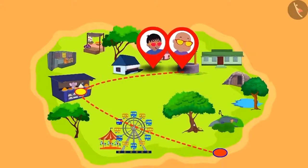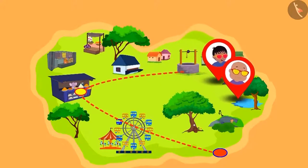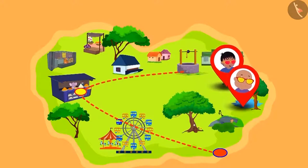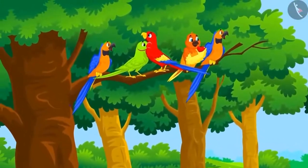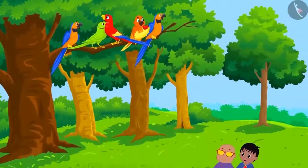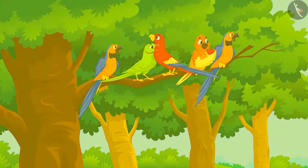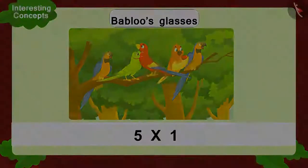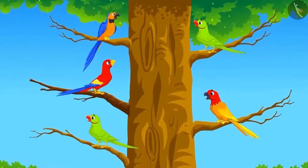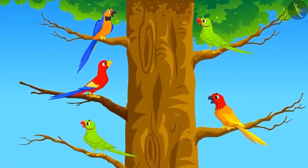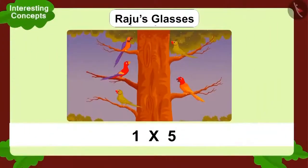Bablu and Raju were excited by the multiplication magic of their glasses and didn't realize they had reached the park. In the park, five birds were sitting on a branch of a tree. Bablu looked at the tree through his glasses first and saw this multiplication. Suddenly the birds flew and now there was one bird on five separate branches. Raju wore his glasses and looked at the tree.